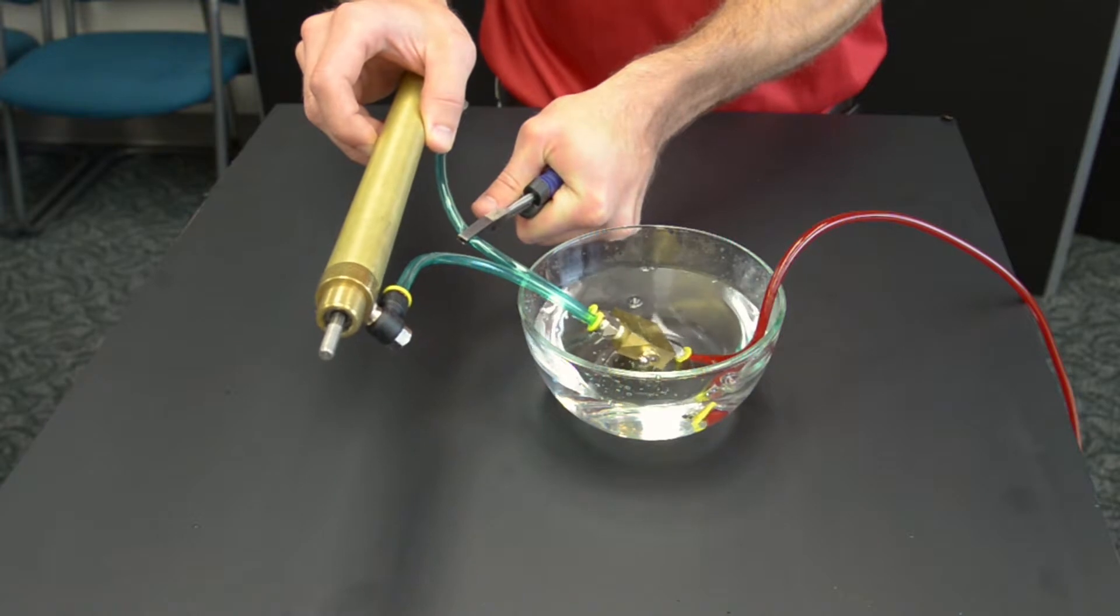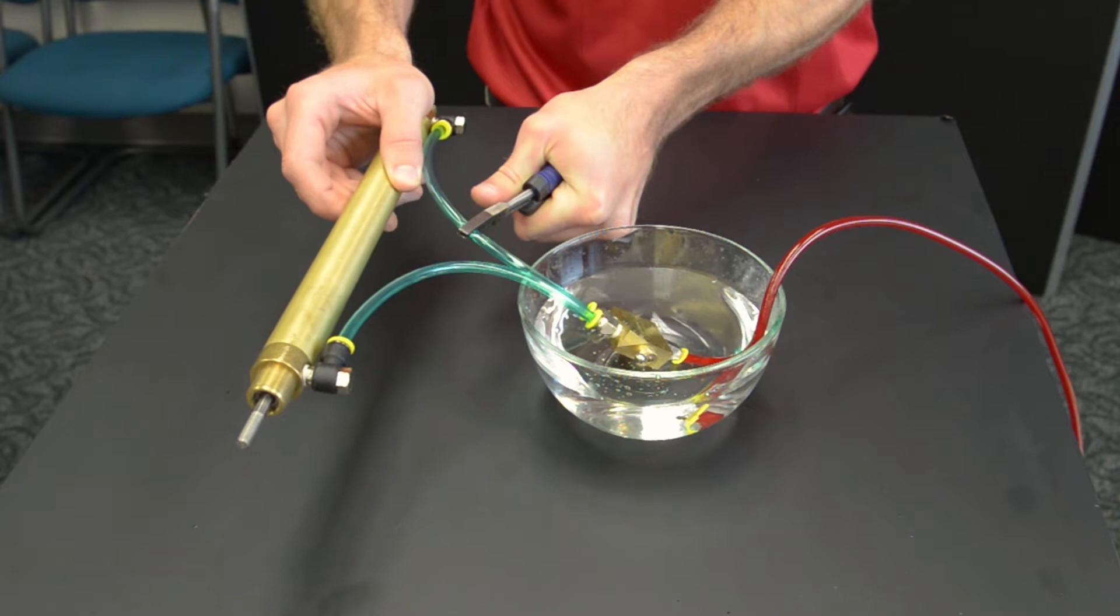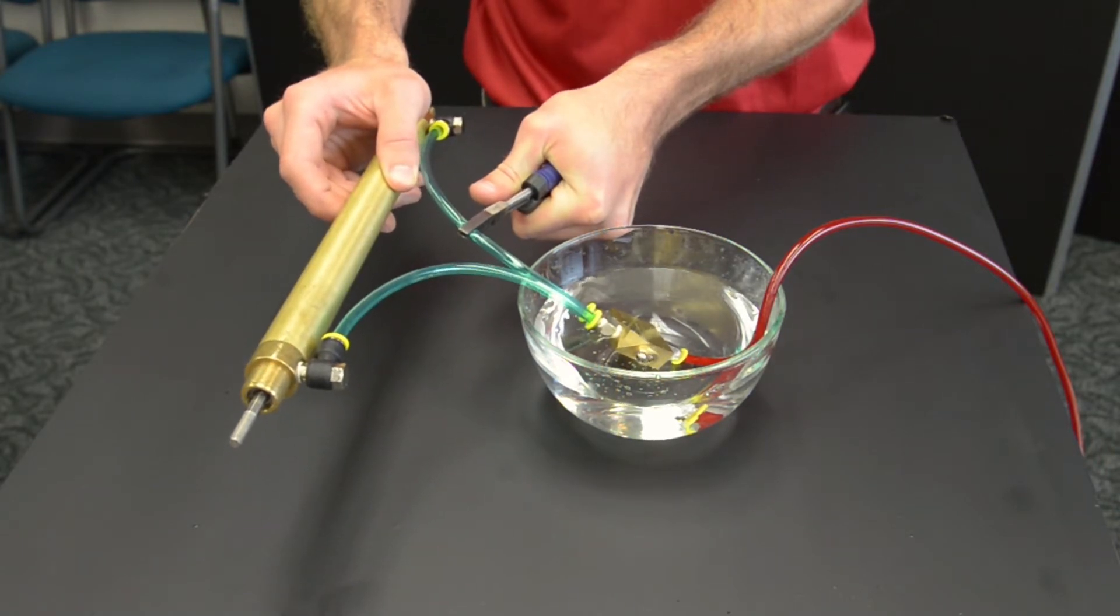If the exhaust leak stops, then this indicates a bad piston seal in the cylinder. If the leak continues, this indicates that the valve is bad.